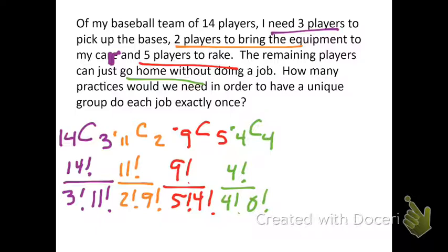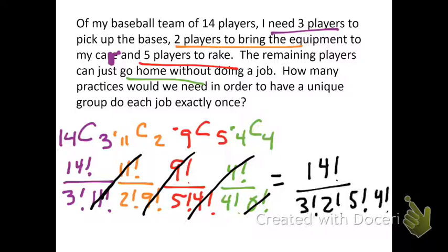So, when we use the definition of a combination, each, I color coordinated it, it's going to look like that. Now, when we multiply across, we can do a lot of canceling out. 11 factorial over 11 factorial is 1. Same thing with 9 over 9 factorial, 4 over 4 factorial, and 0 factorial, there's always one way to order nothing, so that's just equal to 1. So, all this simplifies to this. 14 factorial over 3 factorial times 2 factorial times 5 factorial times 4 factorial.